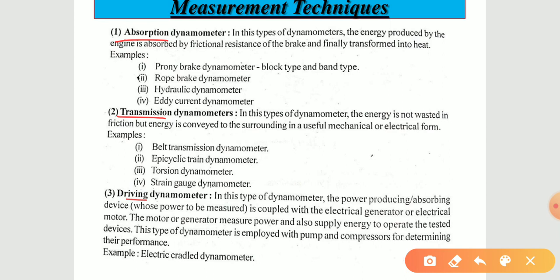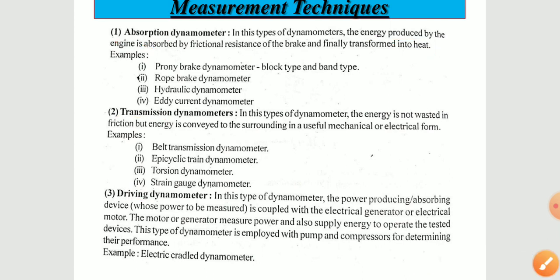In the absorption dynamometer, the energy produced by the engine is absorbed by the friction resistance of the brake and finally transformed into heat. Examples are prony brake dynamometer, block and band type, rope type, hydraulic dynamometer, and eddy current dynamometer.